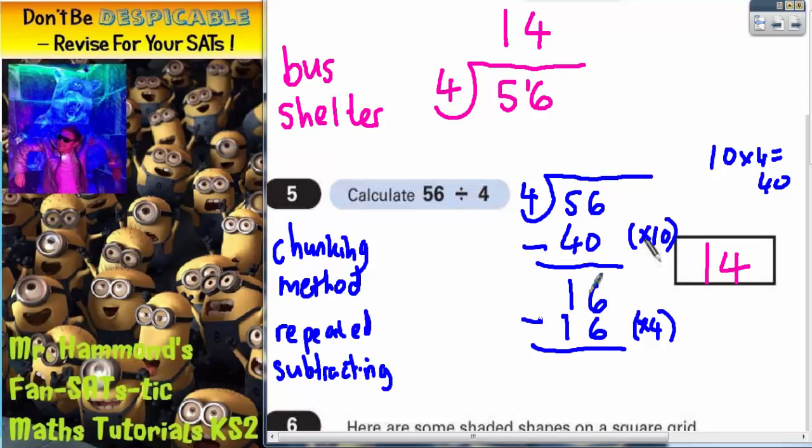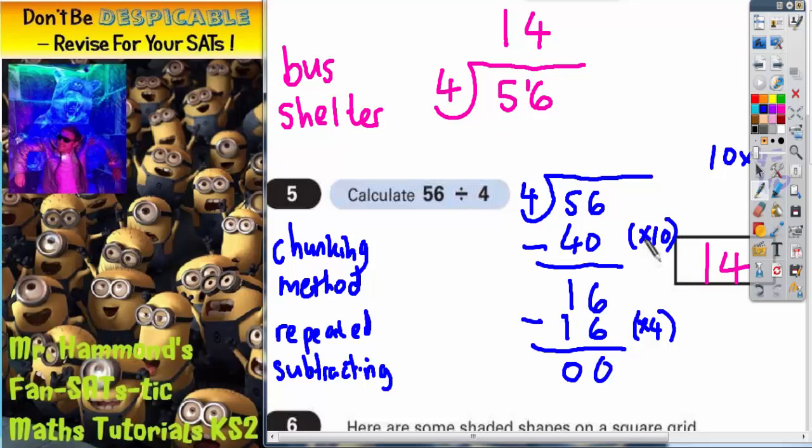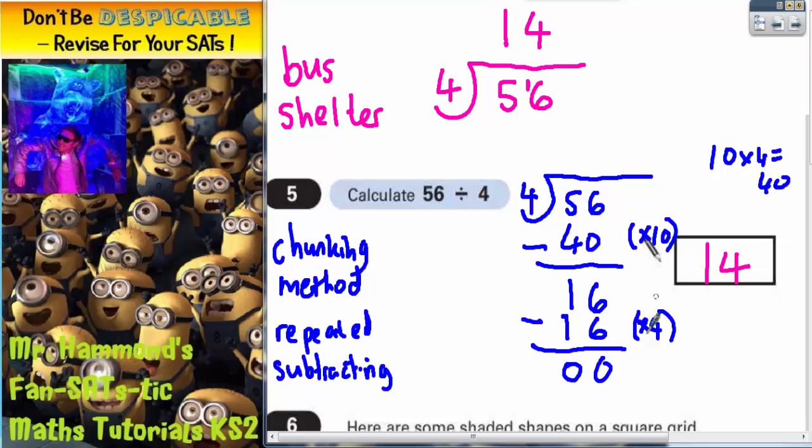And when we subtract that, 6 take 6 is 0, 1 take 1 is 0, so we've got nothing left. Now the whole point of chunking is that when you've got nothing left you add up your chunks. We've got a chunk of 10 there and a chunk of 4 there.